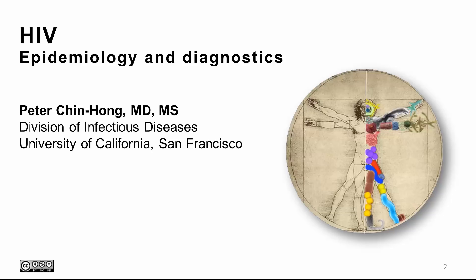Writing in the New York Times, Dr. Larry Altman, one of the pioneering HIV journalists, wrote, reflecting on the 30th anniversary of the AIDS epidemic: the epidemic has brought a new focus on the power of epidemiology to identify a disease's transmission patterns long before discovery of its cause.